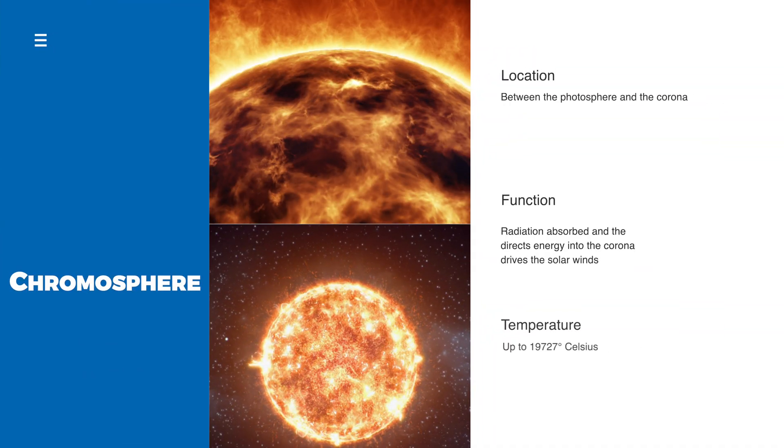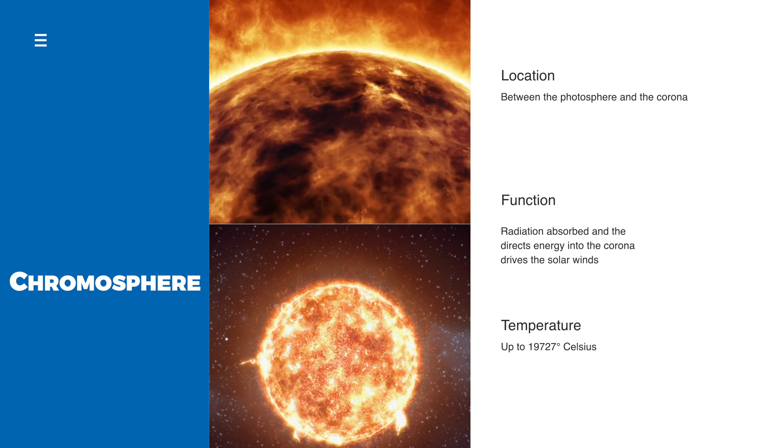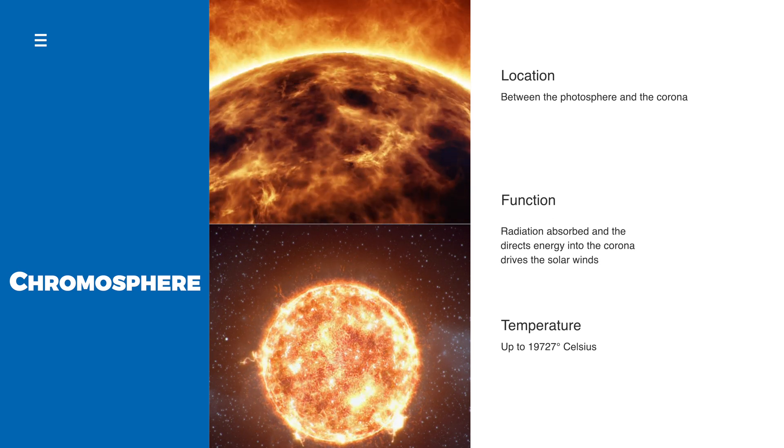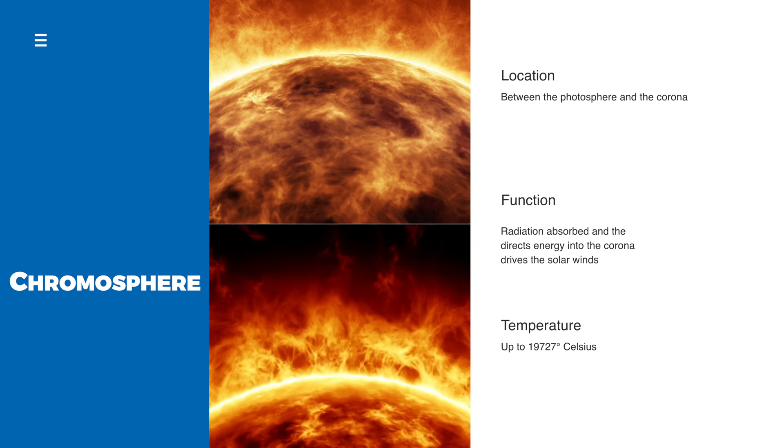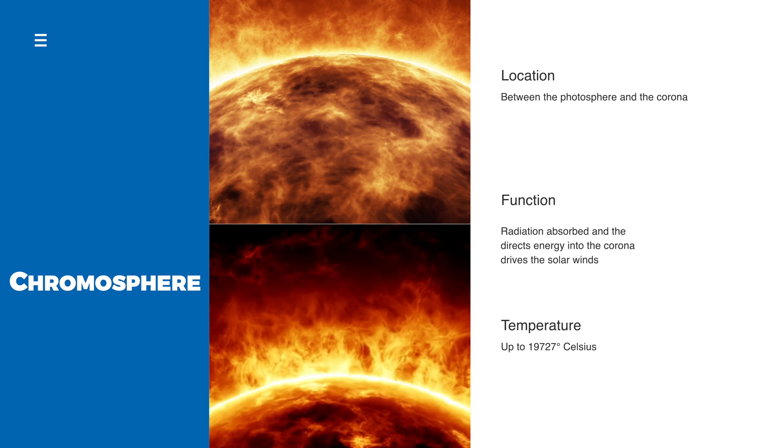The chromosphere is a layer of the Sun that lies between the photosphere and the corona. It is an important aspect of the Sun, as it absorbs radiation and channels energy into the corona, which drives solar winds.